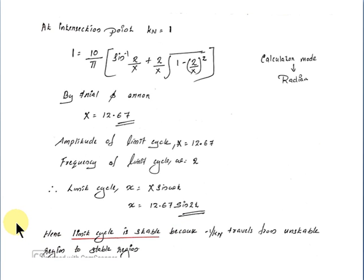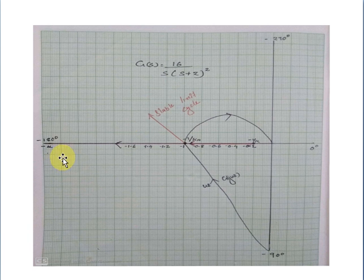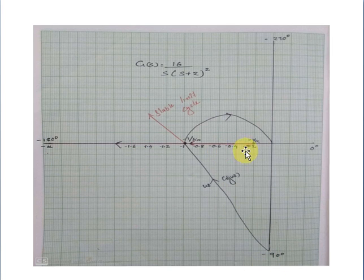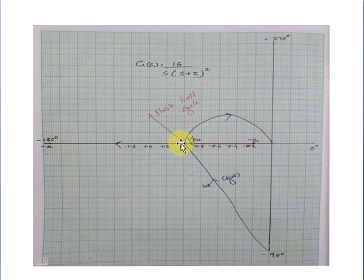Draw it on the graph sheet. The minus 1 by KN locus goes from minus infinity to minus 0.2. The G(jω) locus intersects at minus 1. It goes from unstable to stable. Therefore, the limit cycle is stable.